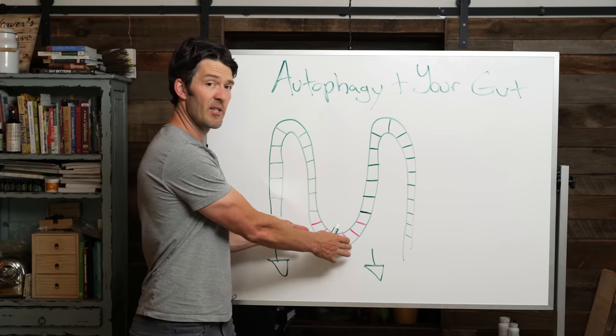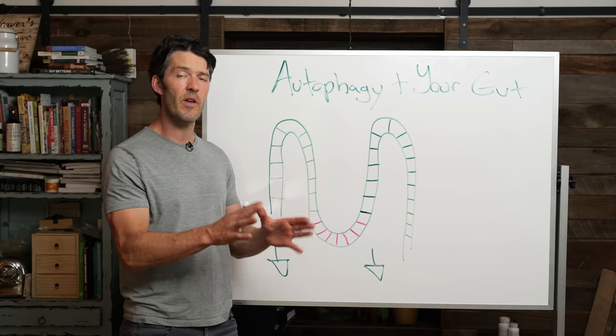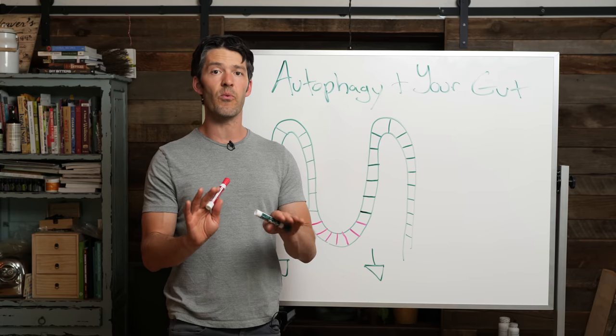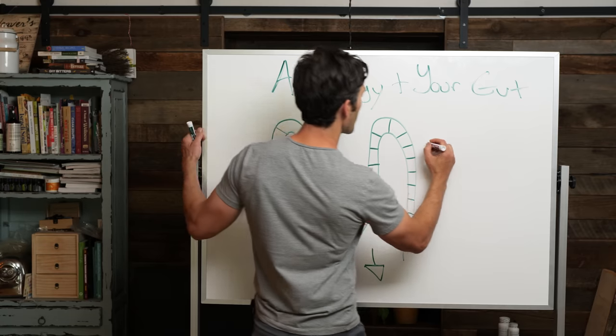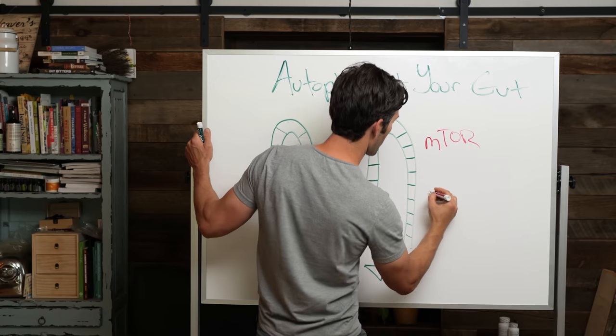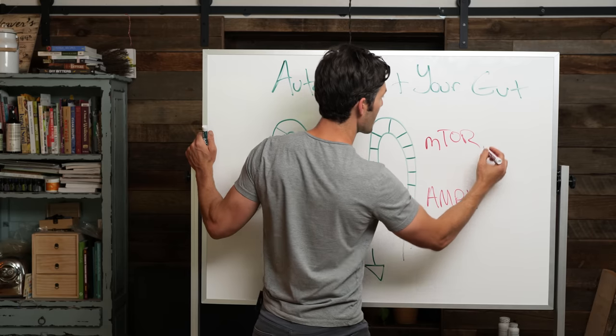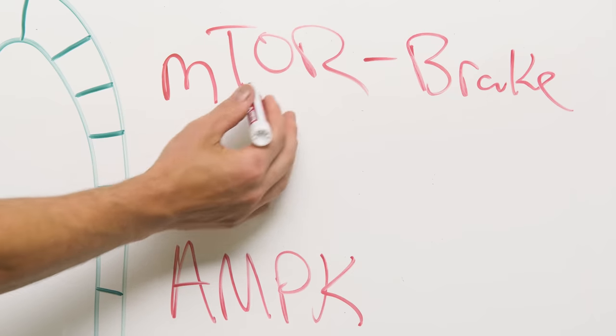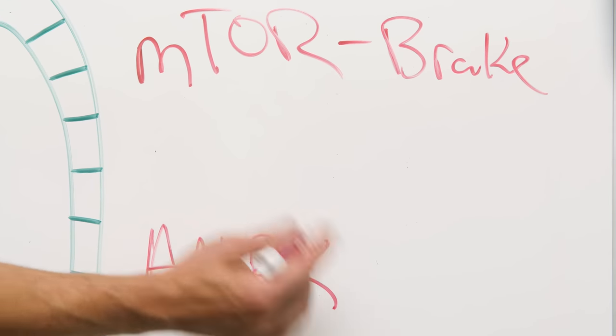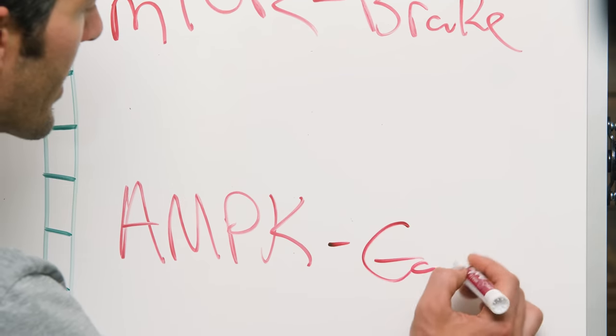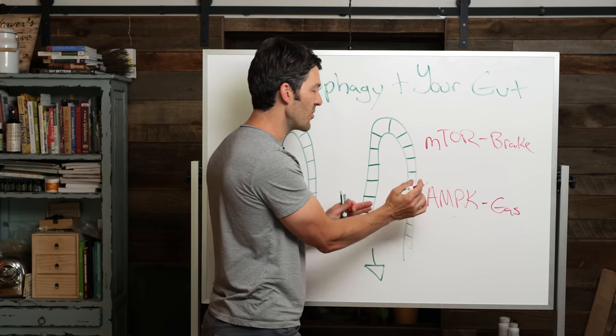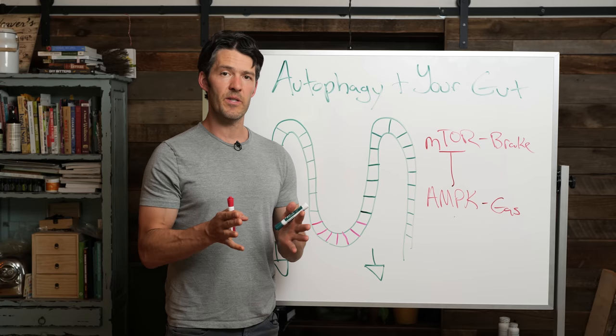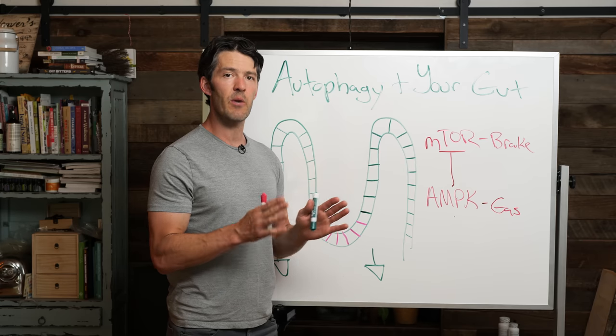Before we get into the weeds with Paneth cells and intestinal stem cells and tight junctions, we need to do a basic review. I'm going to talk about the gas pedal and the brakes regulating autophagy. We're going to talk about mTOR and AMPK. These are intracellular switches, kinases. This is the brake, mTOR is the brake, AMPK is the gas. What's unique about AMPK is it also puts the brake on mTOR.